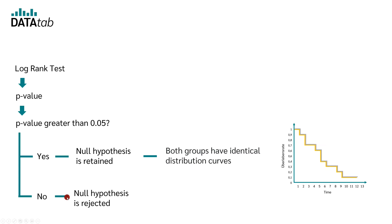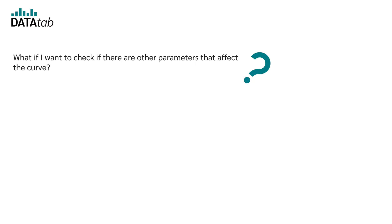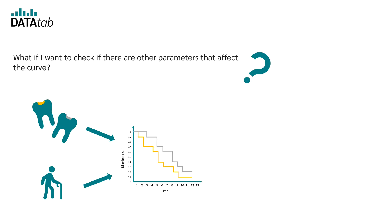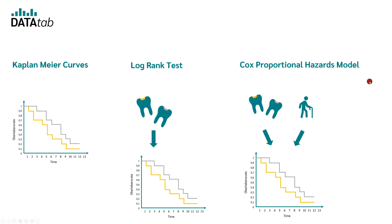You might ask yourself: how can I test if there are other parameters that influence the curve? Not only do you want to know if the material has an effect on survival time, but also whether the age of the people has an effect. For this, you can use a Cox regression. For each of these methods, there is also a detailed separate video.